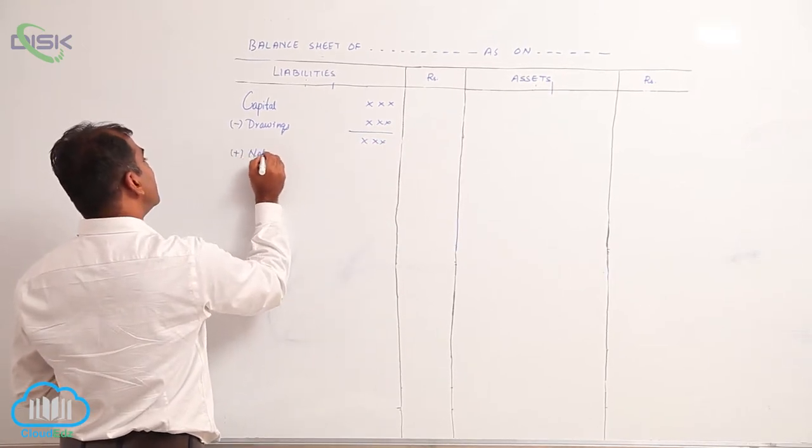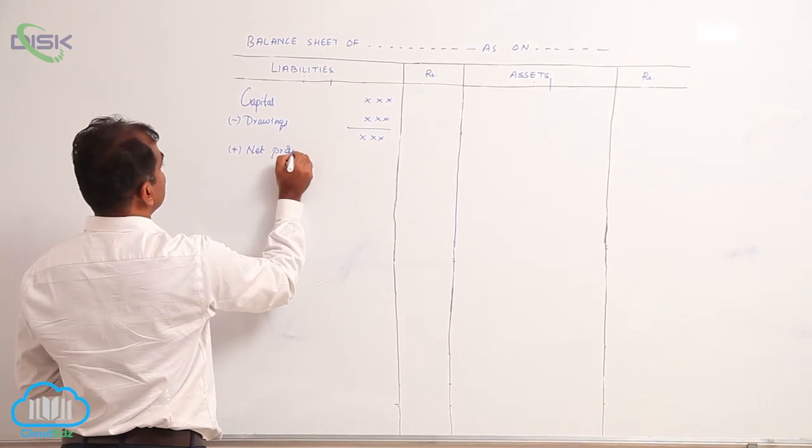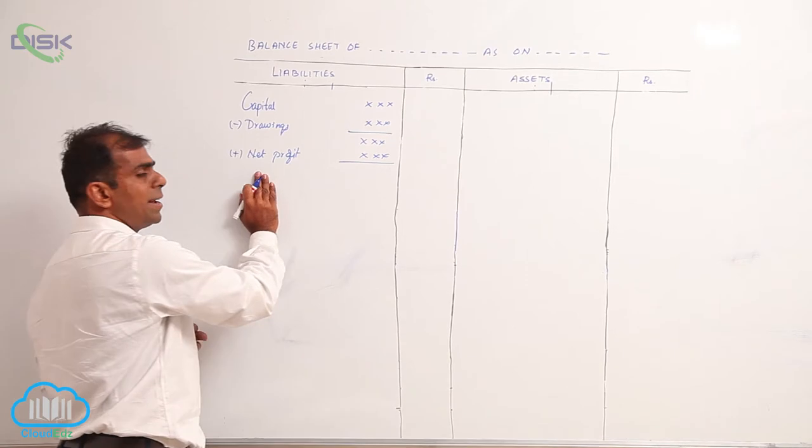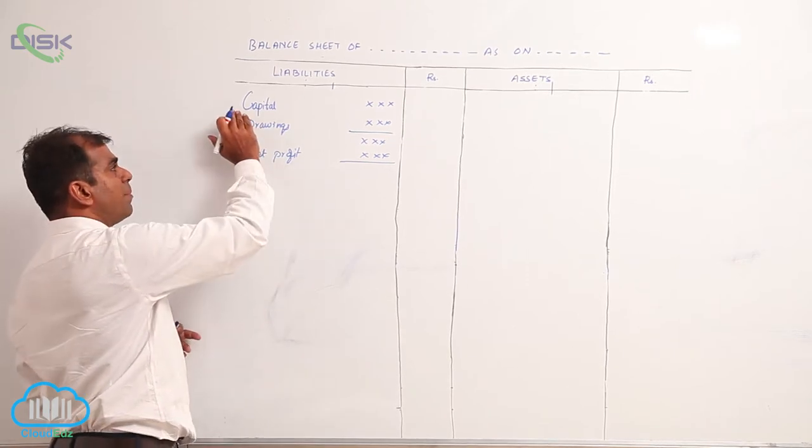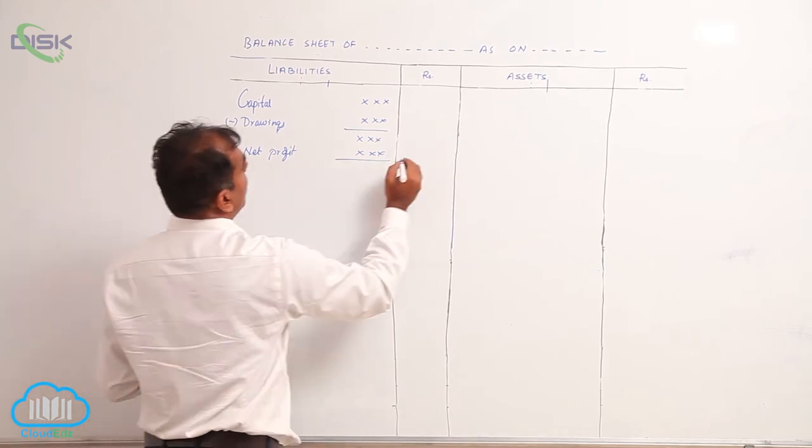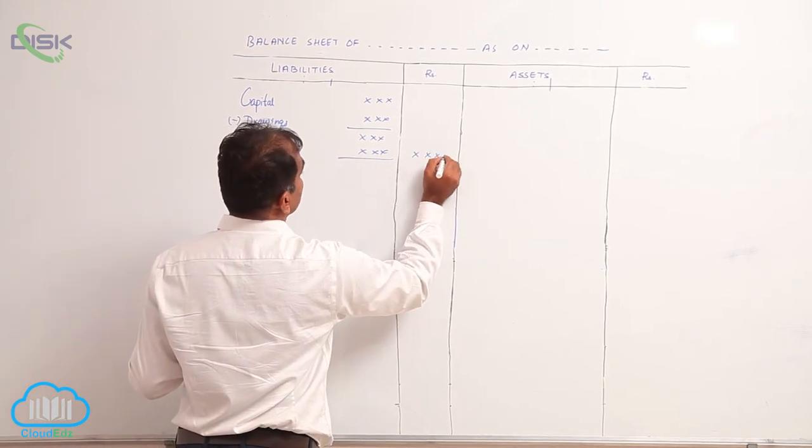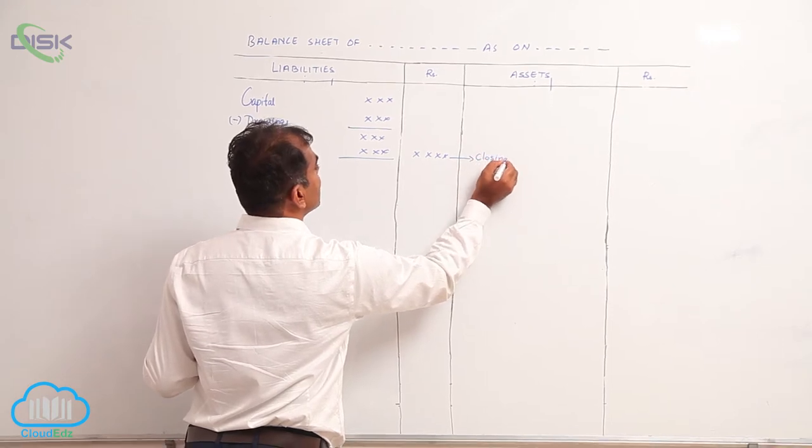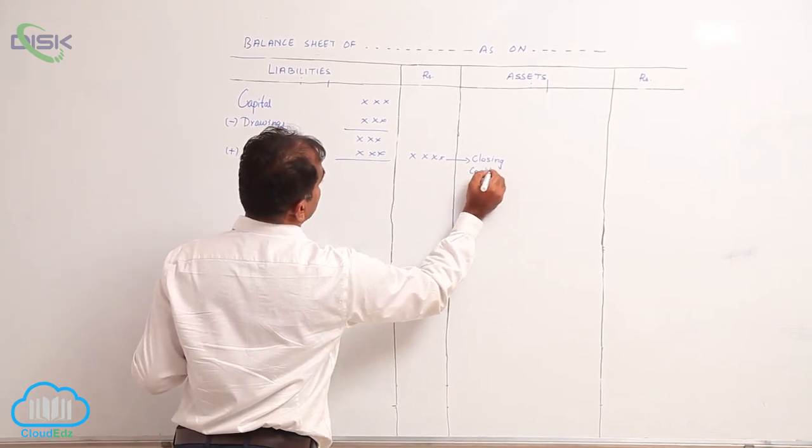Capital is represented in the balance sheet as follows: if net loss is there, the same is deducted. So, capital minus drawings plus net profit or minus net loss - this is called your closing capital.